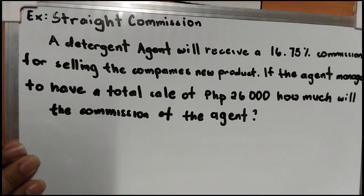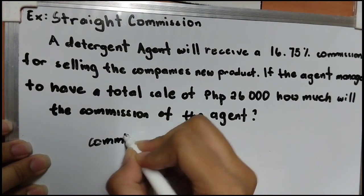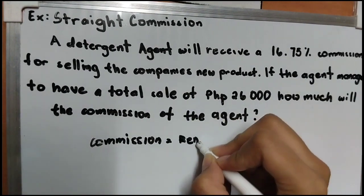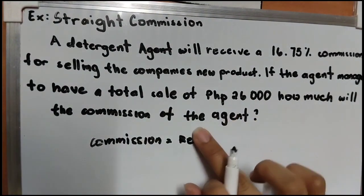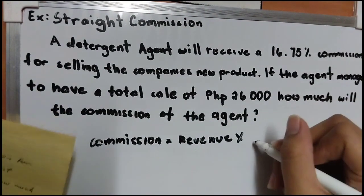So, may example tayo dito para sa Straight Commission. A detergent agent will receive a 16.75% commission for selling the company's new product. If the agent manages to have a total sale of P26,000, how much will the commission of the agent be? Ito yung process paano i-solve yung Straight Commission: Commission equals revenue times commission percentage.